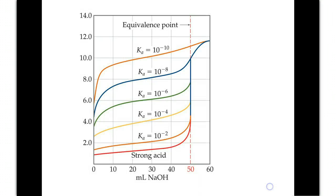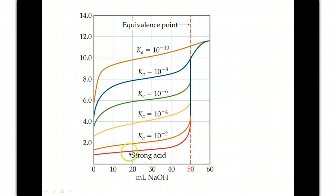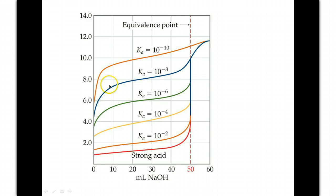Let's look at different titration curves. Each color represents a different type of titration. The x-axis shows volume of strong base added; the y-axis shows pH. For a strong acid, as you keep adding strong base, the pH jumps dramatically — that's an unbuffered solution. The change is almost instantaneous with very little volume. The weaker the acid, the slower and more gradual the change. The Ka gets smaller and smaller for each curve — the smaller the Ka, the weaker the acid and the more buffered the system.